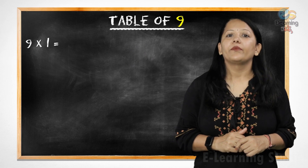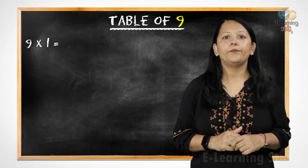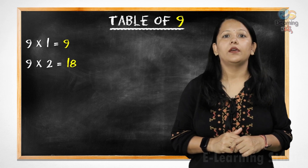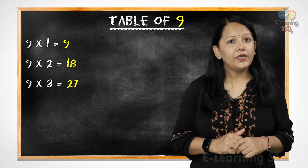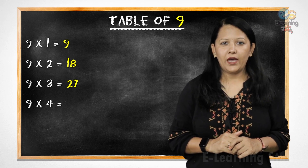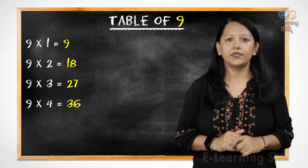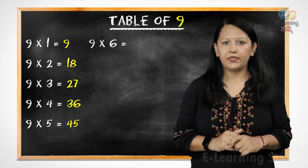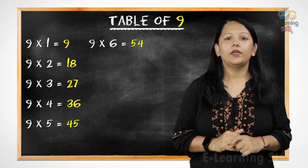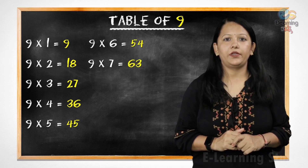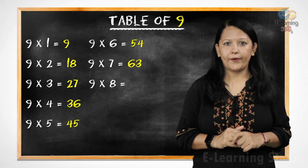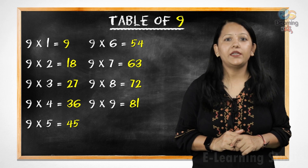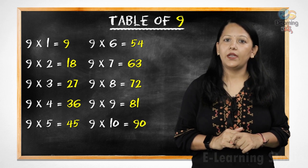Let's revise it. 9 ones are 9, 9 twos are 18, 9 threes are 27, 9 fours are 36, 9 fives are 45, 9 sixes are 54, 9 sevens are 63, 9 eights are 72, 9 nines are 81, 9 tens are 90.